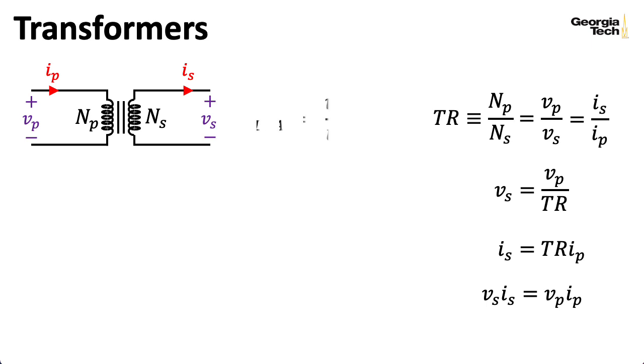Let me write down an Ohm's law style expression and say that the impedance of the load is the voltage across the secondary divided by the current through the secondary. Similarly, we'll say the impedance reflected by the transformer can be written as the voltage across the primary divided by the current across the primary.